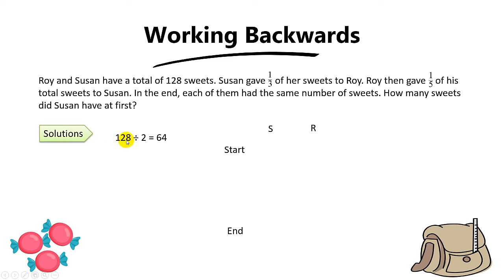You simply take 128 divided by 2. Do you know why? Because when Susan gave to Roy and Roy gave back to Susan, does the total change? No, it doesn't. They're basically just transferring to one another. Since the total doesn't change, the total will remain at 128. And since each of them have the same number of sweets in the end, you simply take 128 divided by 2, you get 64.